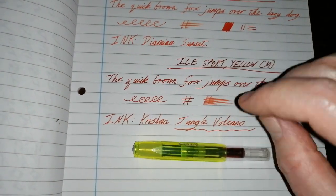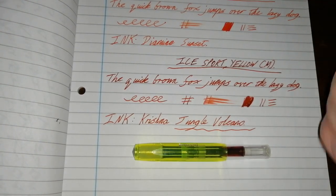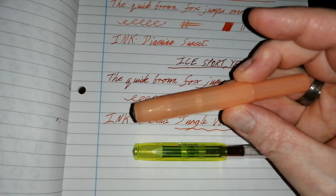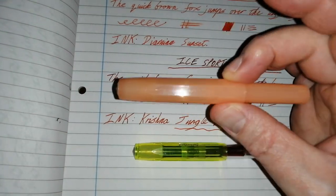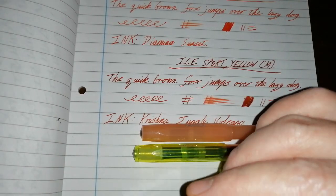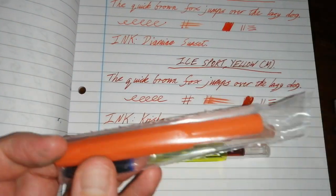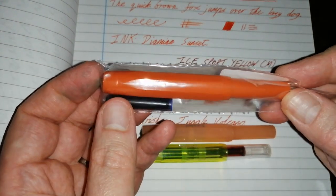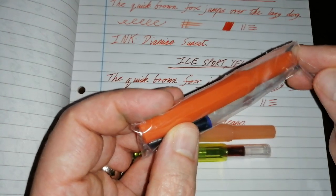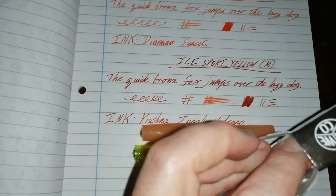So, Kaweco Sport in its plastic variations. Ice Sport, the clear version. Frosted Sport, the plastic translucent, frosted version. Surprise, surprise. And of course, the Skyline Sport, which is available in this one, which is the Fox Limited, not Limited, Edition, Special Edition Color. So, 2019 Special Edition Color.